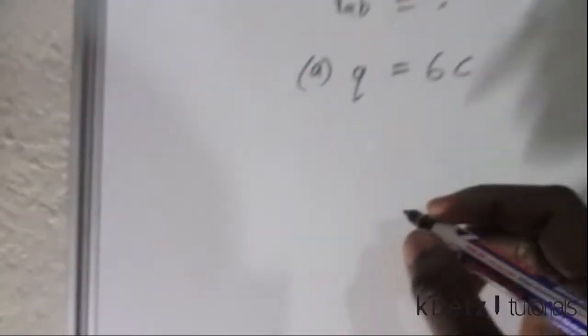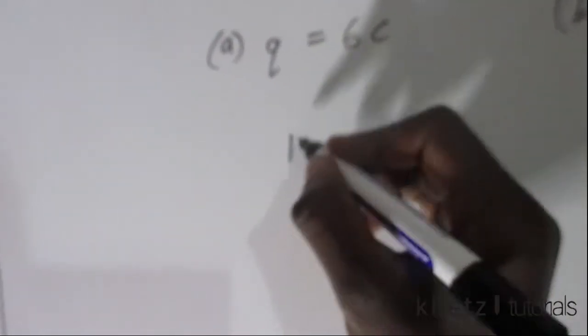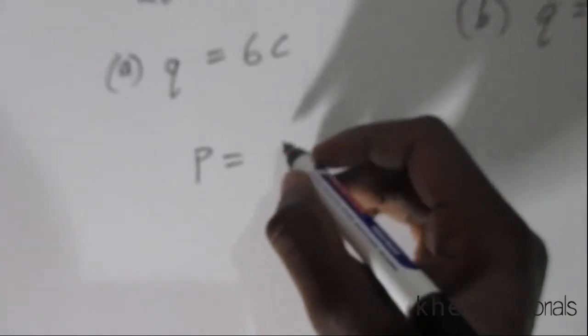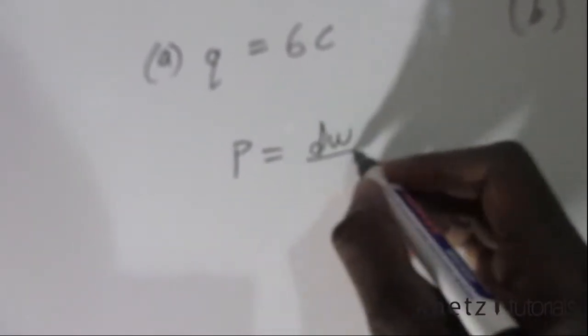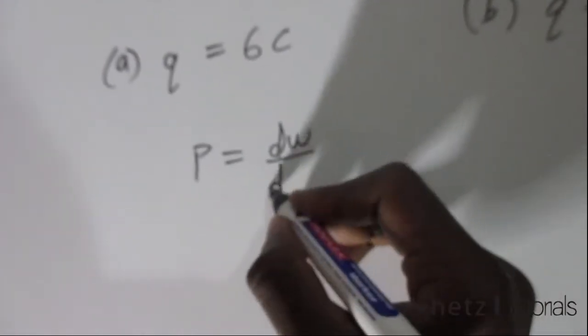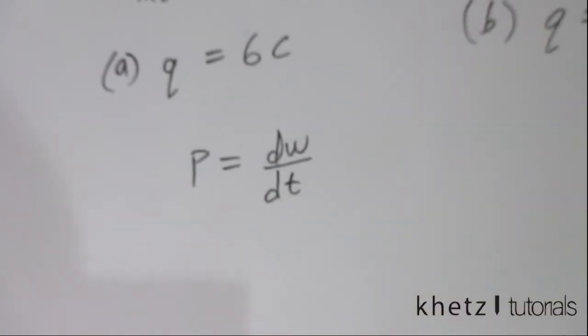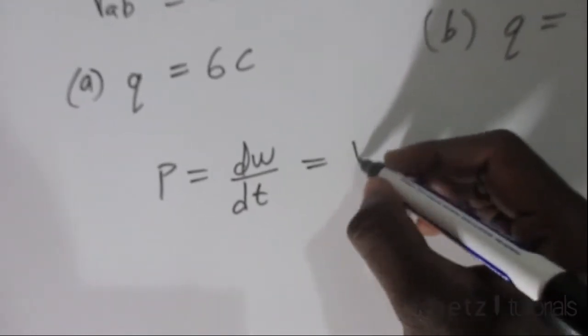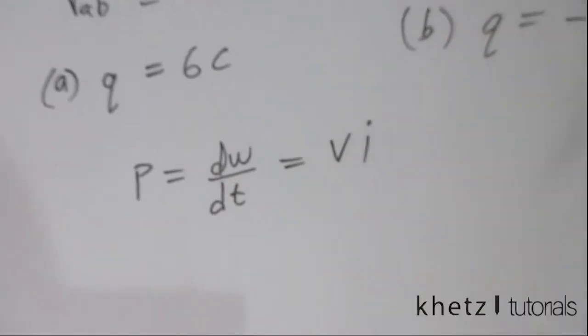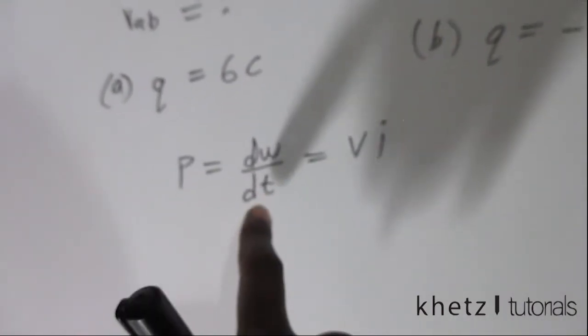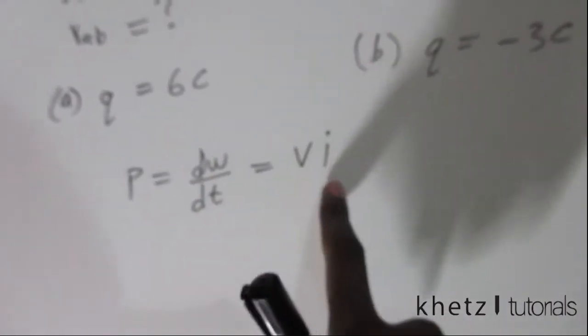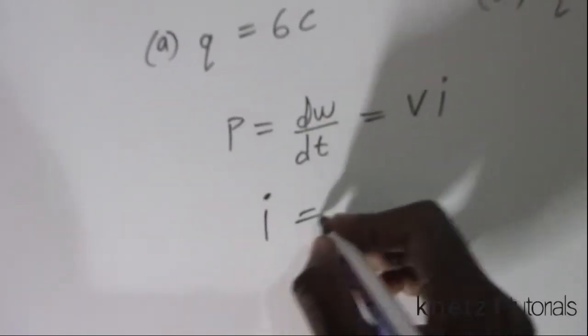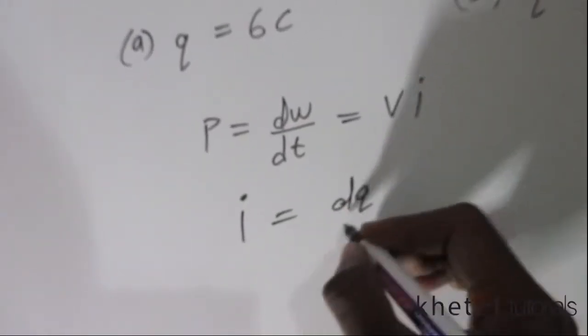Now knowing that power is the time rate of change of energy, and that power is also equals to V multiplied by i, you can manipulate this. We do know that i equals the time rate of change of charge.